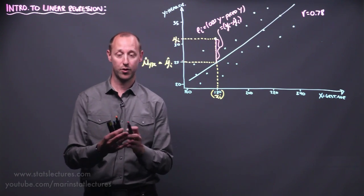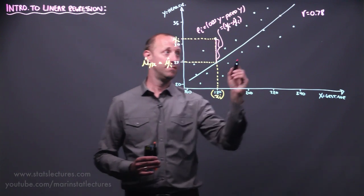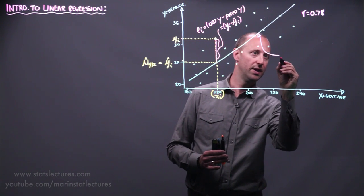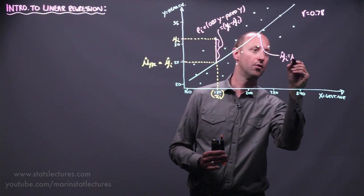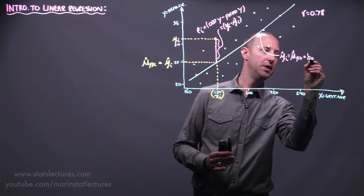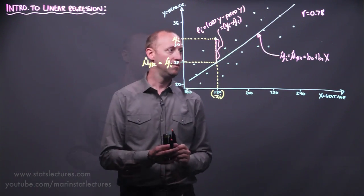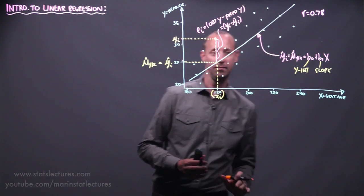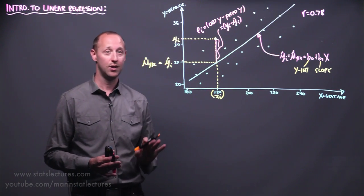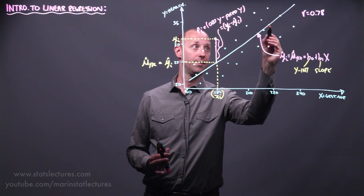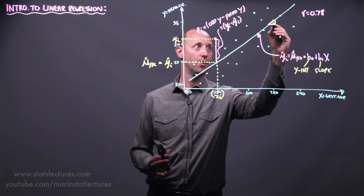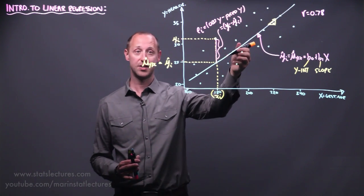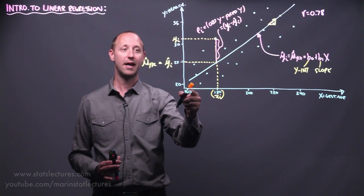Now let's label the regression line that we fit. We can label this as yi-hat — the estimated mean of y given x — equals b0 plus b1 times x, where b0 is the y-intercept and b1 is the slope of the line. In order to define a line we need to give it some point on the line as well as the slope, or the rate of increase. The y-intercept is where the line crosses the y-axis at x equals 0.